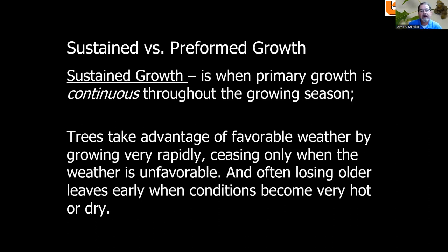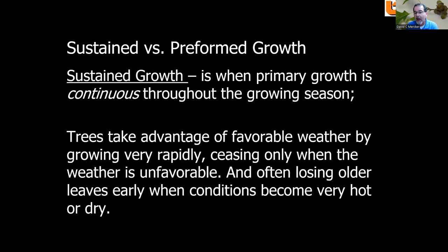Sustained versus preformed growth: sustained growth is when primary growth is continuous throughout the growing season, so leaves can continue to flush as long as conditions are right. Trees take advantage of favorable weather by growing very rapidly, and cease only when unfavorable weather — like hot, dry weather in midsummer — exists. Trees with sustained growth often lose their older leaves early. If you've gone beneath a river birch, tulip poplar, or cottonwood in midsummer and seen leaves falling, don't be concerned — they're just aborting older leaves because there isn't enough water to keep all of them alive.